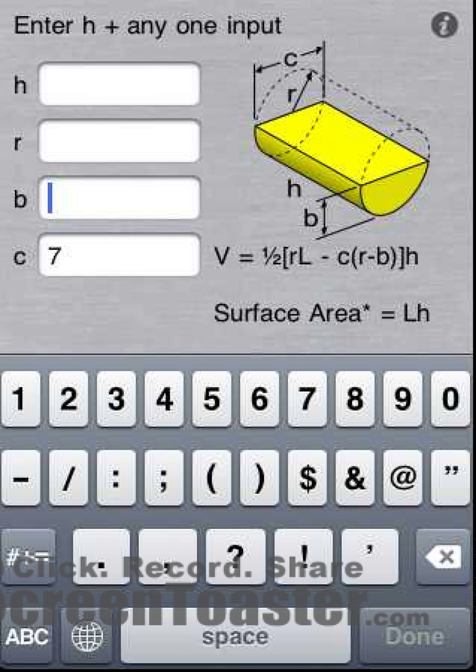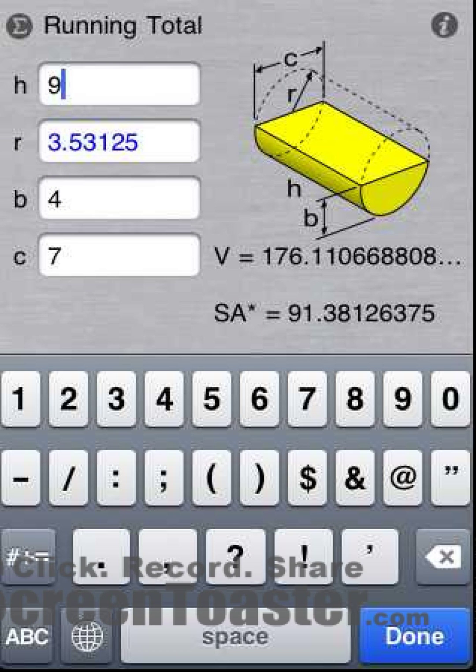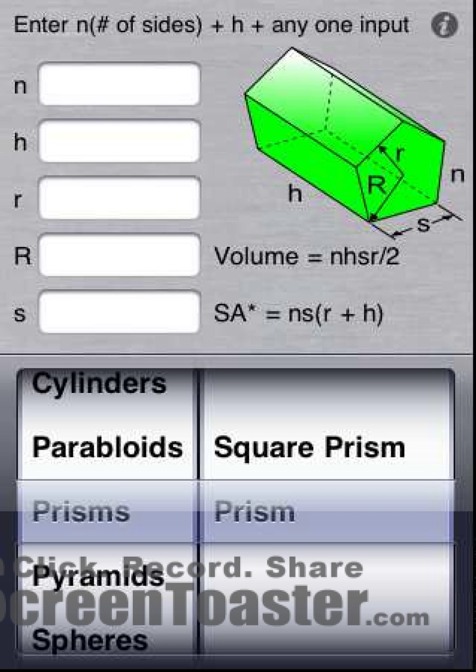Watch how easy it is to enter another set of parameters. And one more time saving feature. When we change categories, the volume calculator remembers the last shape used in each category.